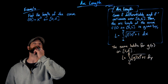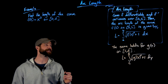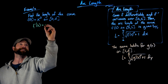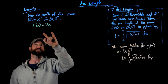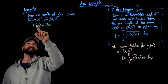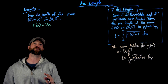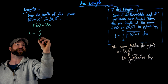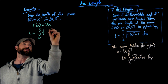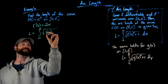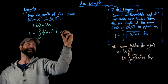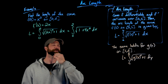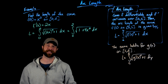Let's check this example. I have f(x) = x² on the interval from 0 to 2. My first move is to find f'(x), which is 2x. Quick check: this is obviously a continuous function on this interval and it's differentiable everywhere — it's a polynomial. So then the length of this curve is the integral from 0 to 2 of the square root of (2x)² plus 1, dx — which simplifies to the square root of 4x² plus 1, dx.